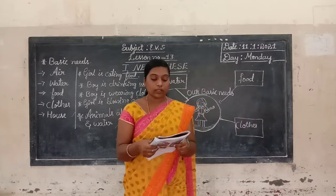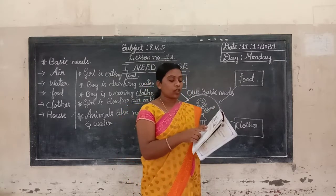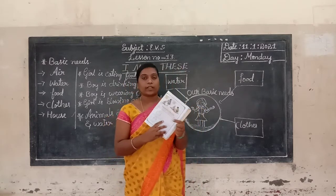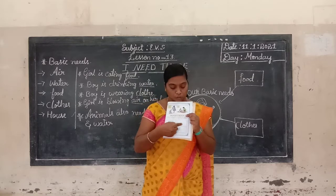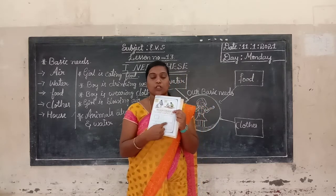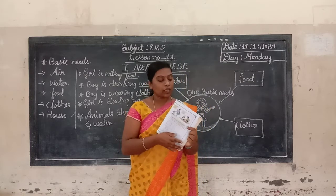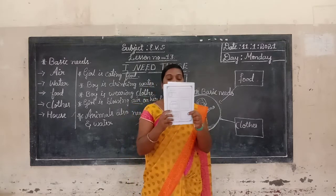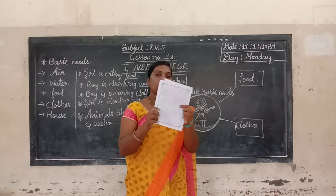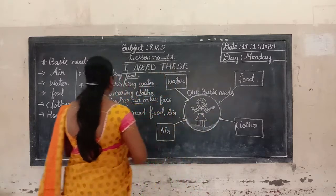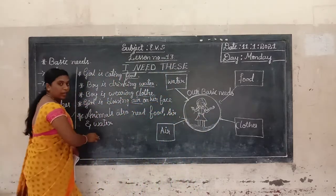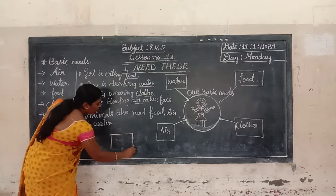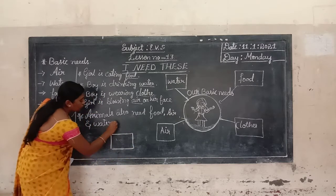Draw in the box — draw a picture of a house in the empty box. Children, you also draw the picture as it is shown. Then page number 89 — you also try to draw your picture of a house. Let's go — you try to draw your picture.